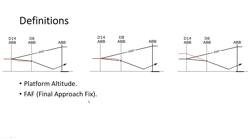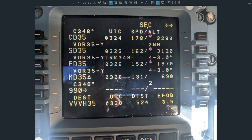Next, the final approach fix — that is an industry standard term. Usually it is a star symbol on the chart. There are different manufacturers for charts, but the vast majority use a similar star-like symbol. The final descent point is an Airbus term — the point after which a continuous descent is coded. To know what that point is, you will have to look at the FMS coding.